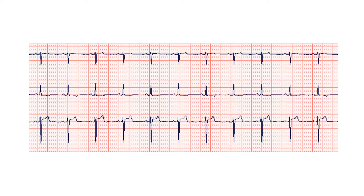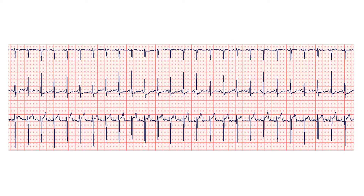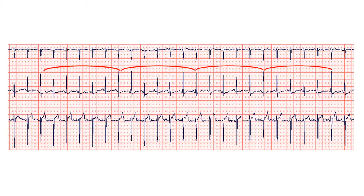Usually QRS complexes have the same morphology in a certain lead, but sometimes the amplitude of the R and S waves may vary upon respiration. On this ECG we see different amplitudes of the R wave. Less commonly, S wave amplitude varies.